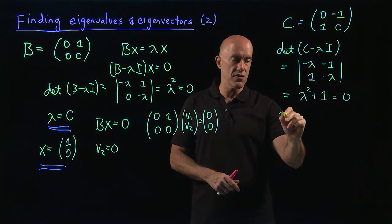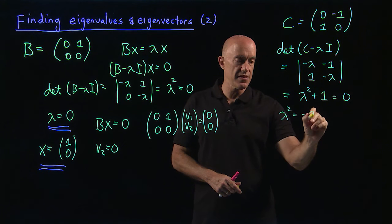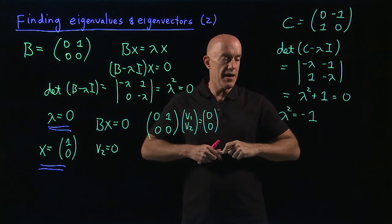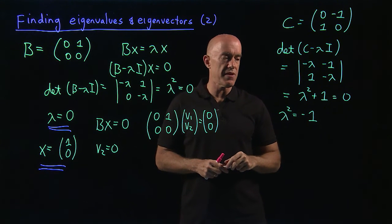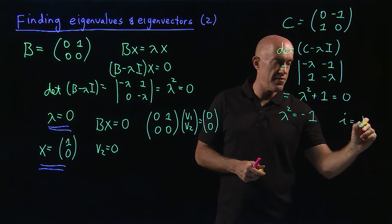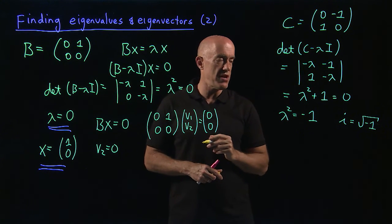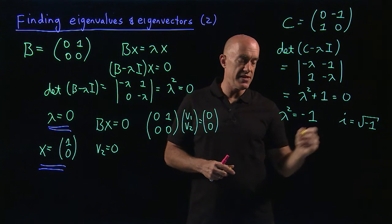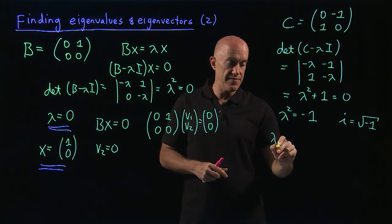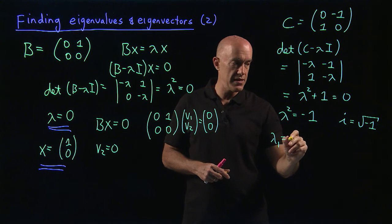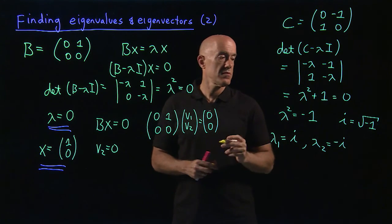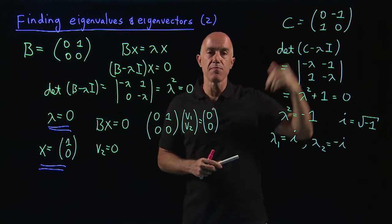So lambda squared equals negative 1. This is a number that when you square it you get negative 1 — that's the definition of the imaginary number i, where i is the square root of negative 1. So lambda squared equals minus 1 has two roots, giving two eigenvalues: lambda 1 equals plus i, and lambda 2 equals minus i. This matrix has complex eigenvalues.